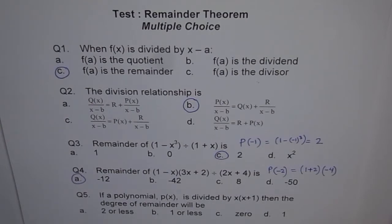Question 5. If a polynomial p(x) is divided by x times x plus 1, then the degree of remainder will be, well, if you are dividing by this, degree of this term is x square. Therefore, degree of remainder should be anywhere less than 2, correct? So 1 or less, correct? That is the choice.